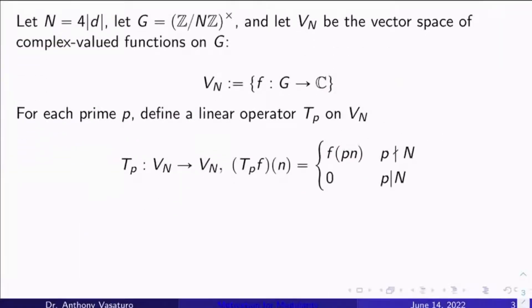For each prime p, I'm going to define a special linear operator, which I'll cutely call T_p for now, and you'll see why in a moment. It's going to be a linear operator on this vector space, V_N here. What's it going to do? It's going to go from V_N to V_N. It's going to take a function on G to a function on G. What is the function on G that T_p sends a given function f to?